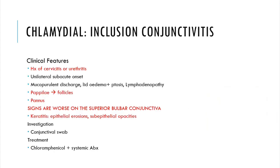Moving on to inclusion conjunctivitis — named after the inclusion bodies traditionally seen on smear — and caused by the other serotypes of Chlamydia trachomatis, so D to K. It's milder than trachoma with minimal scarring and rarely permanent visual loss. It's more common in first world countries, particularly in young sexually active males. The clinical features are those of the sexually transmitted infection, which are cervicitis or urethritis.